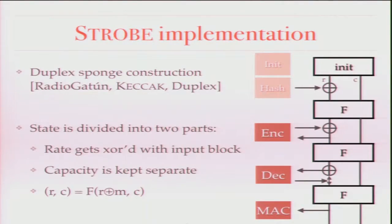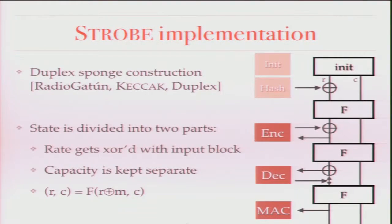The other part is called the capacity, which acts as some combination of a stream cipher key and a hash function chaining value. That part does not interact with the outside world. Every time you do an operation, or you overrun the size of the rate, you run some function f — which in the security modeling is assumed to be a random function or possibly a random permutation — which completely changes the rate and capacity variables. The update function shows that the next rate and capacity will be f of the previous ones XOR'd with the message on the rate side.